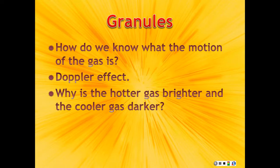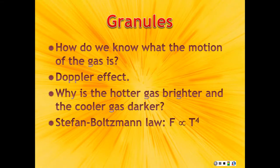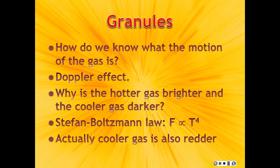We also know that when we have hotter gas, it's brighter. When we have cooler gas, it's darker. That's just from the Stefan-Boltzmann law. Flux goes as T to the 4. So if it's brighter and whiter, it's hotter. And if it's darker and redder, and the gas is actually redder at the edges, then it must be cooler.